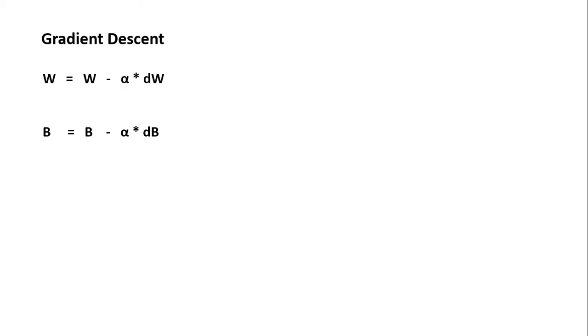We know that the weight updation in the gradient descent is given by these two equations. Now in RMSprop instead of this dW what we do is that we take dW divided by square root of sdw, and similarly dB divided by square root of sdb.